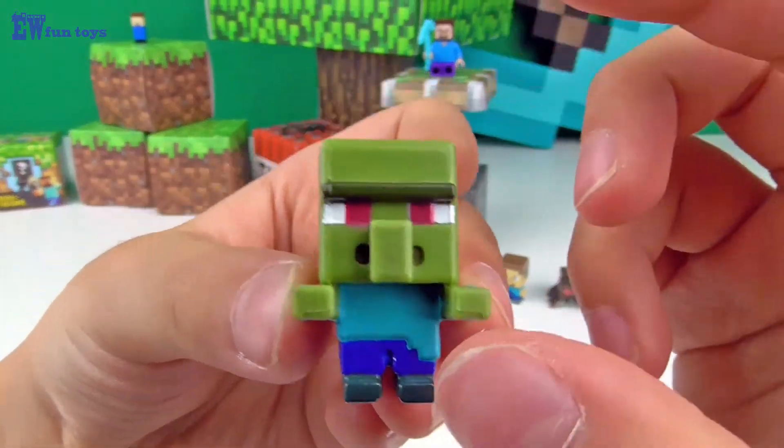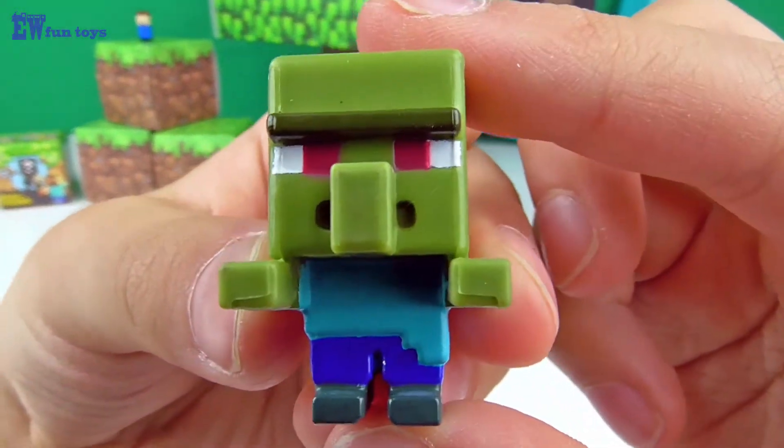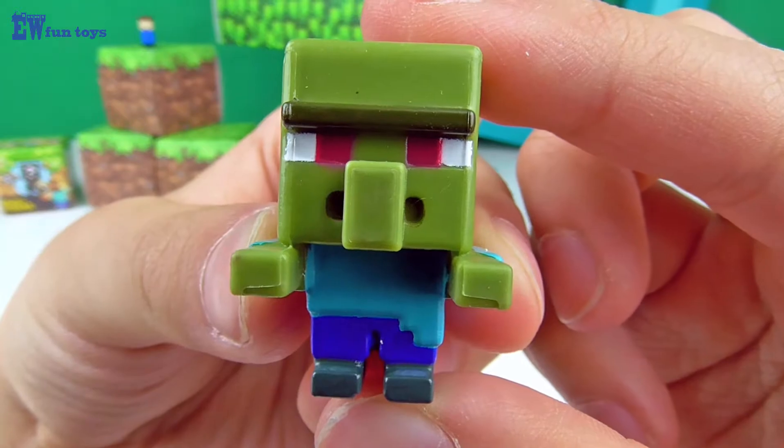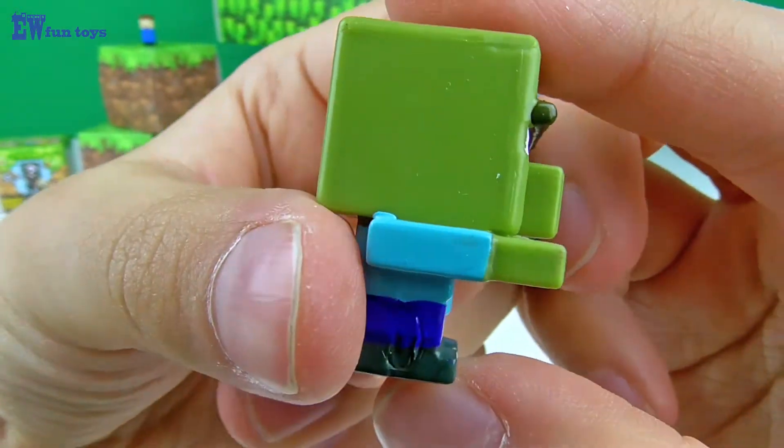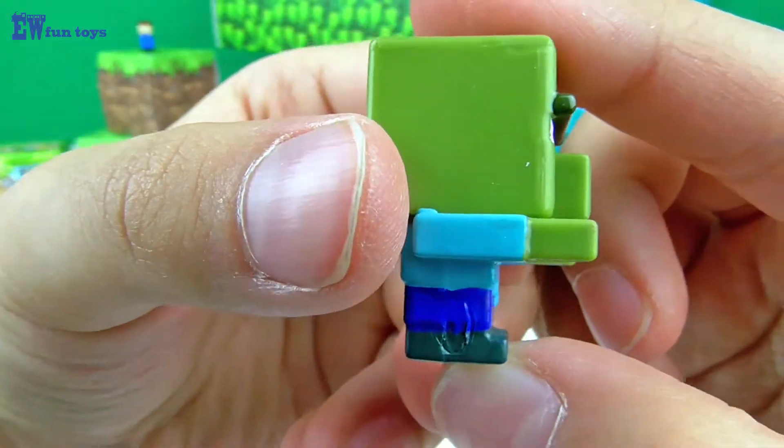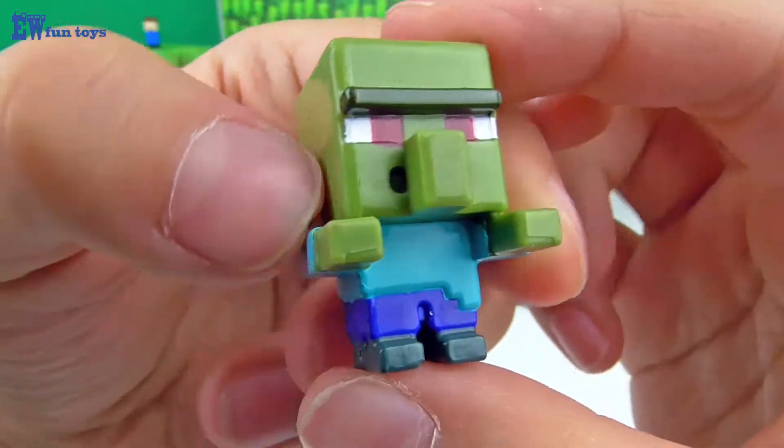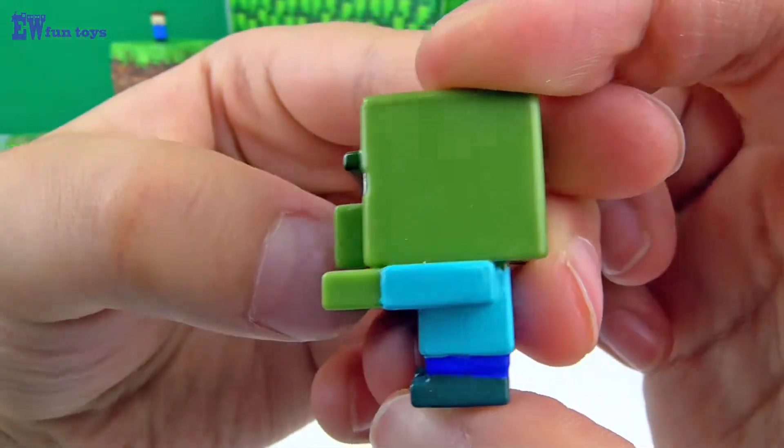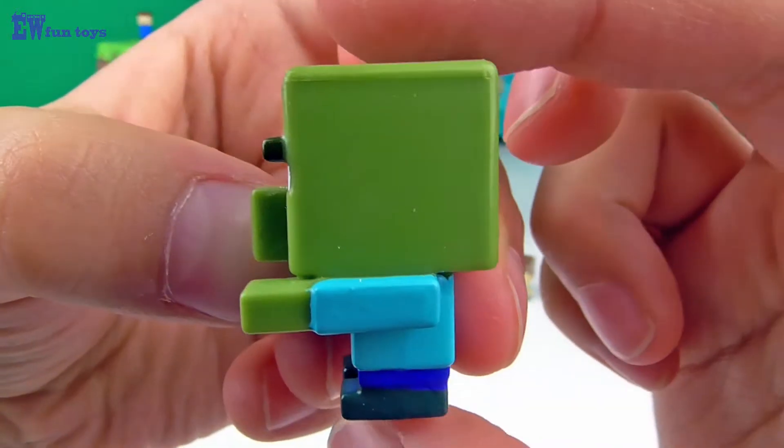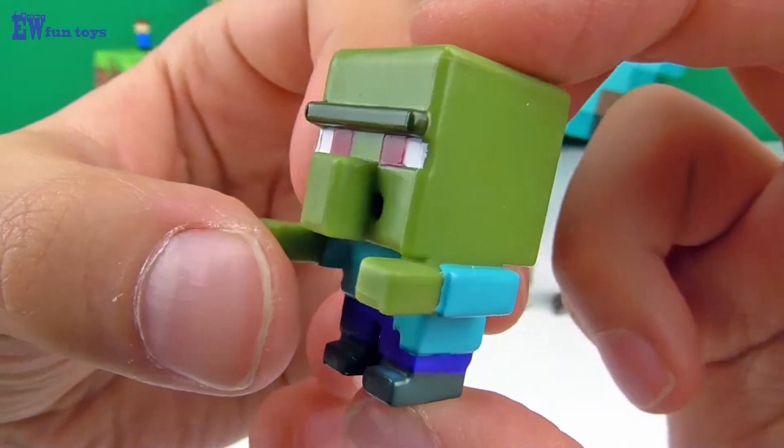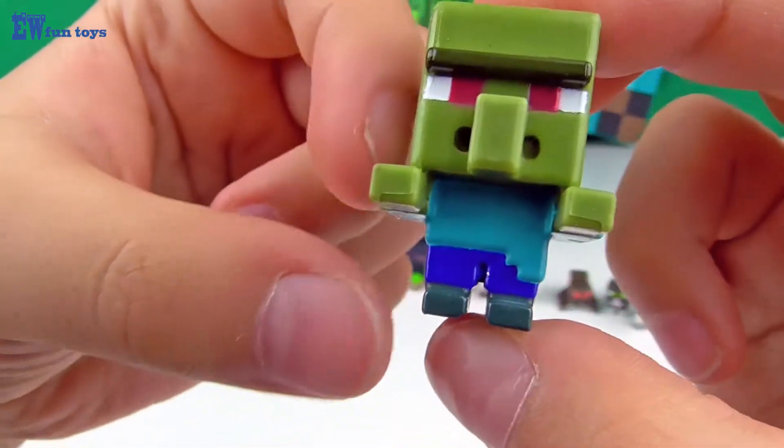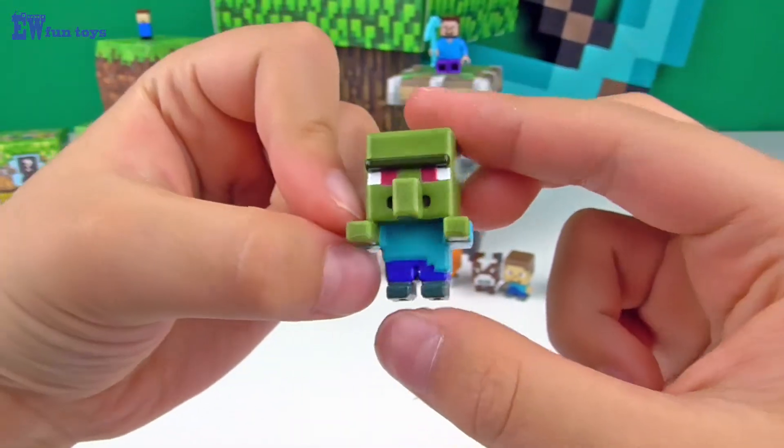Zombie villager. You can find these in villages that are harmed by zombies. These used to be villagers and used to be harmless, but these were infected by zombies. You can change it into a normal villager again using a potion of weakness and a golden apple.